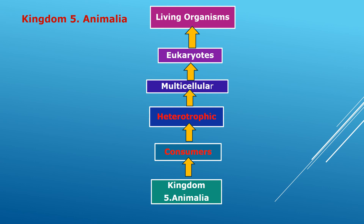The fifth kingdom is kingdom Animalia. Animals are consumers — they take food from other living organisms — so kingdom Animalia is a heterotrophic, multicellular, eukaryotic living organism. They depend on other living organisms for food; multicellular means containing more than one cell; eukaryotic means having a nucleus with bound cell organelles. Kingdoms Plantae and Animalia will be studied in more detail in classes 9 and 10.